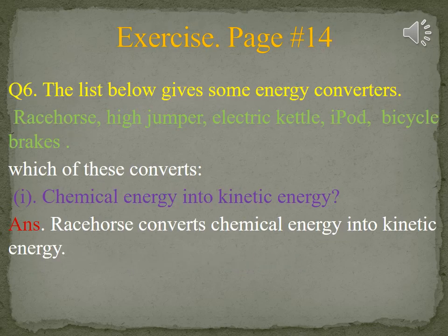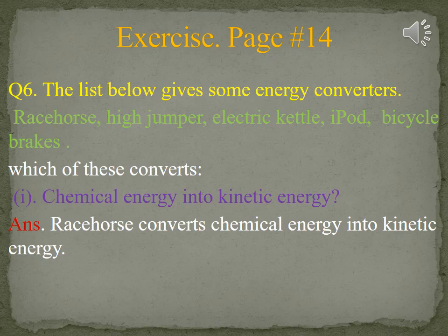Exercise, page number 14, question number 6. The list below gives some energy converters: race horse, high jumper, electric kettle, iPod, bicycle brakes. Part 1: Which converts chemical energy into kinetic energy? Answer: race horse converts chemical energy into kinetic energy. Part 2: Chemical energy into gravitational potential energy. Answer: high jumper converts chemical energy into gravitational potential energy.